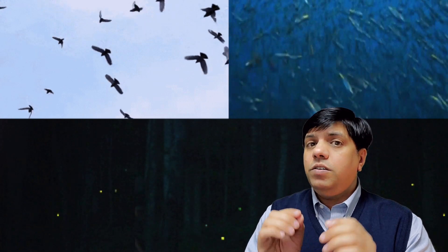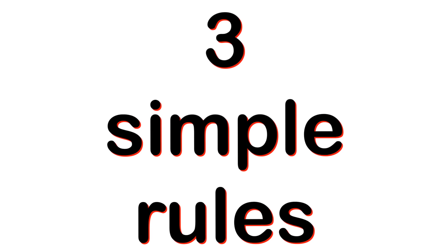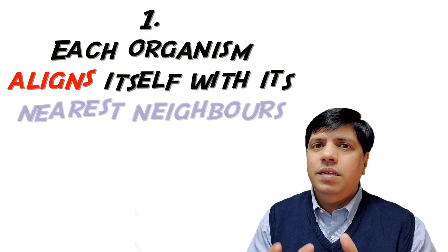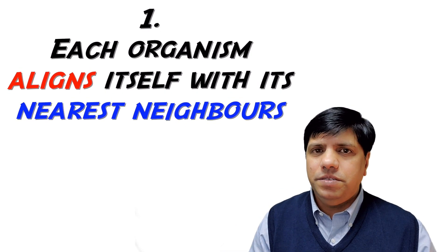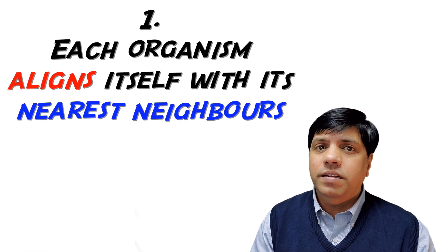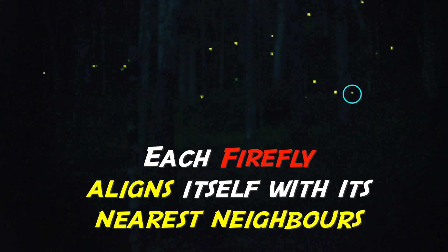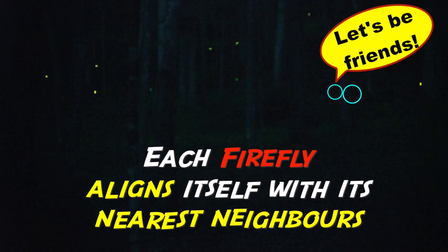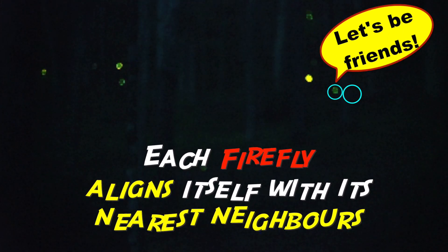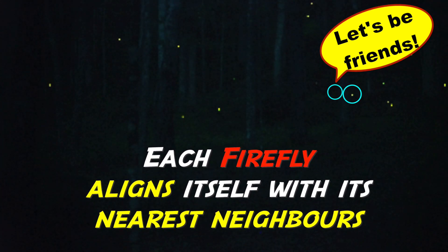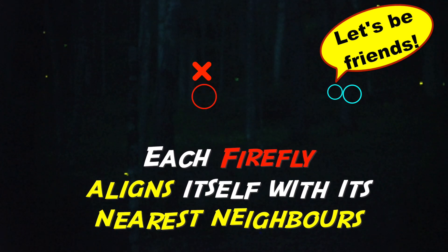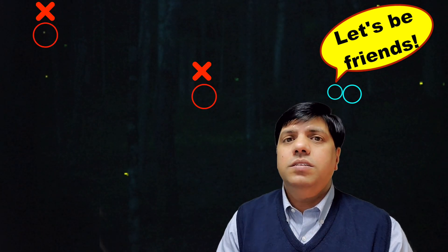In living organisms, spontaneous synchronization works on three simple rules. Rule number one: each organism aligns itself or couples itself with its nearest neighbors. This is very important. What do I mean by that? For example, this firefly aligns itself only to its neighboring firefly. It doesn't couple or align itself with a firefly in the middle of the group or at the other end. So that's rule number one.